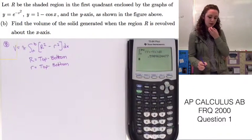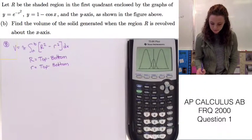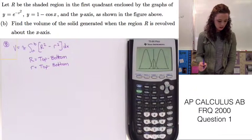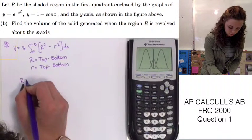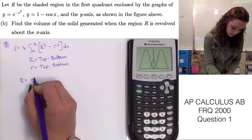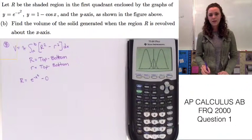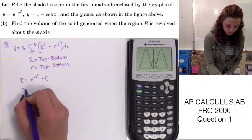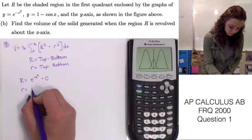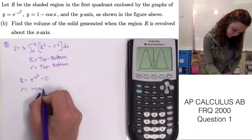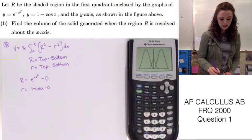Let's find what big R will be. Let's take a look at the graph. We can see that the top function is y1 which is e to the negative x squared. So R will equal e to the negative x squared minus 0 since it's revolving around the x-axis. And little r is going to be the function 1 minus cosine x minus 0.